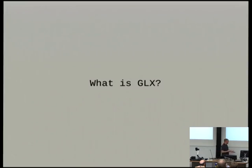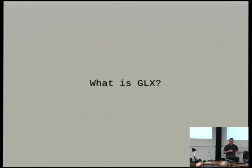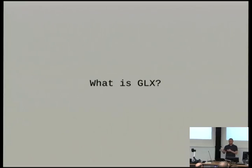So what exactly is this thing? OpenGL is just a rendering API. It has the notion of various buffers — your front buffer, your back buffer, depth, accumulation, stencil — but it doesn't actually define how you get them and it doesn't define how you get bits between them.